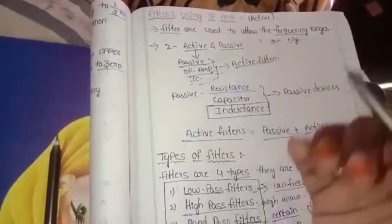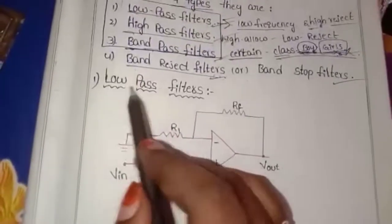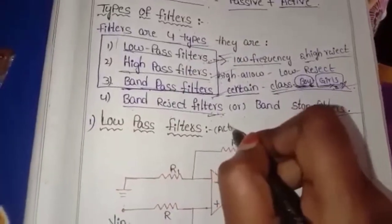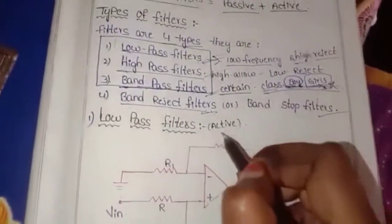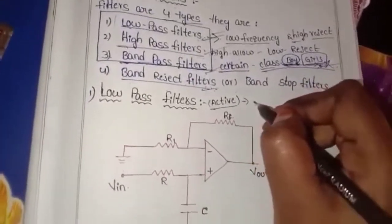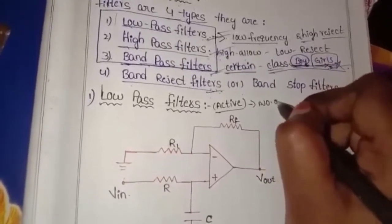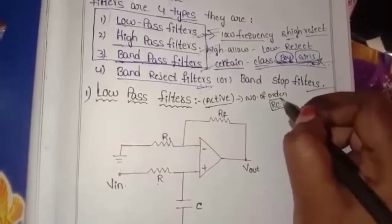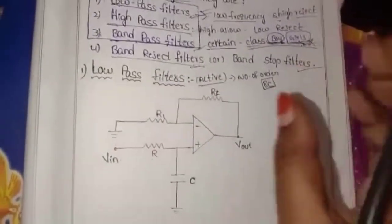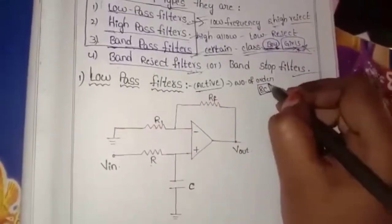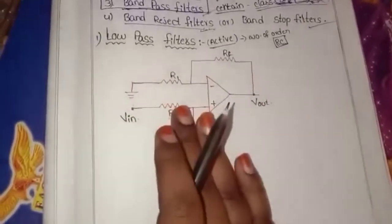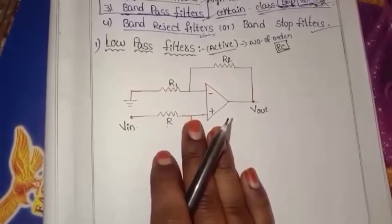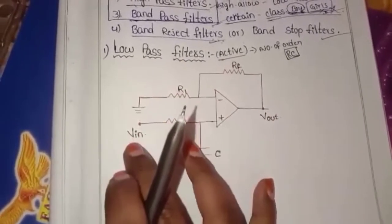Now we will begin. The first thing is low pass filters. Active filters have certain orders and a number of orders. Order is defined using RC — resistance and capacitor. These two combinations are used to design the circuit. The configuration is a non-inverting amplifier, using the non-inverting terminal.